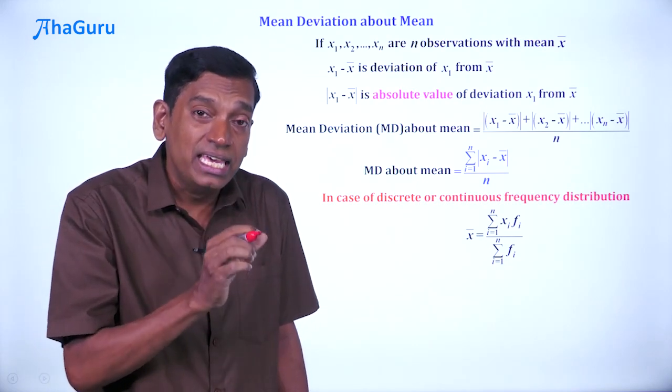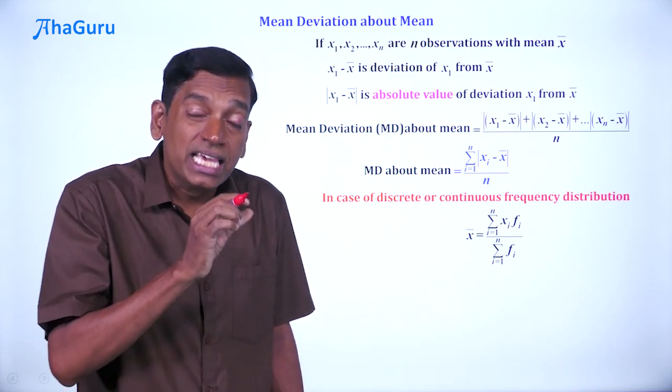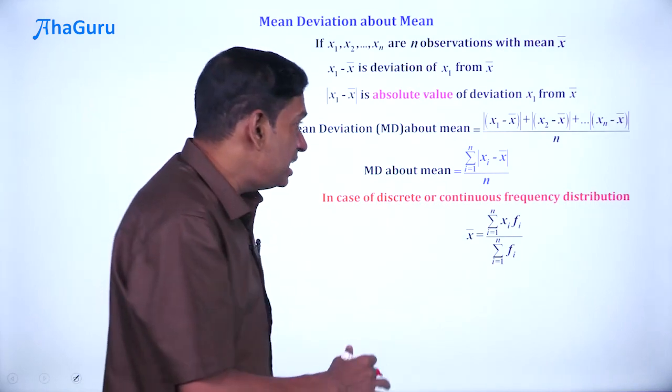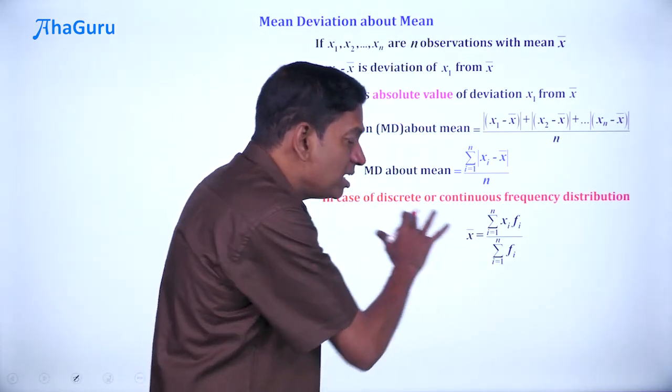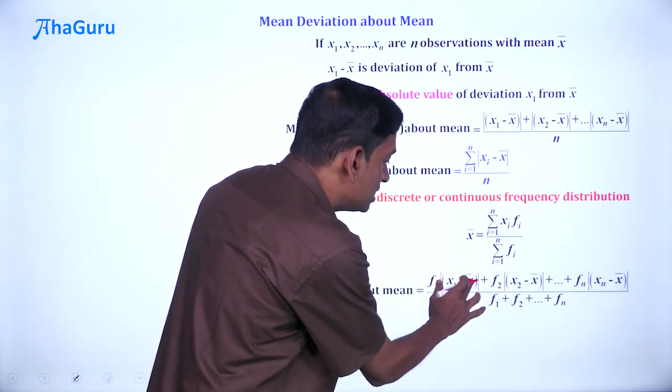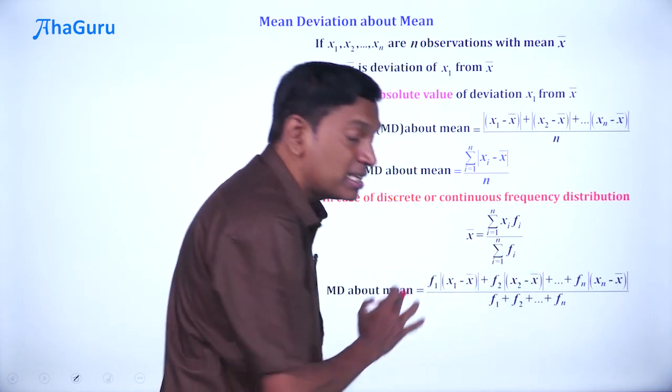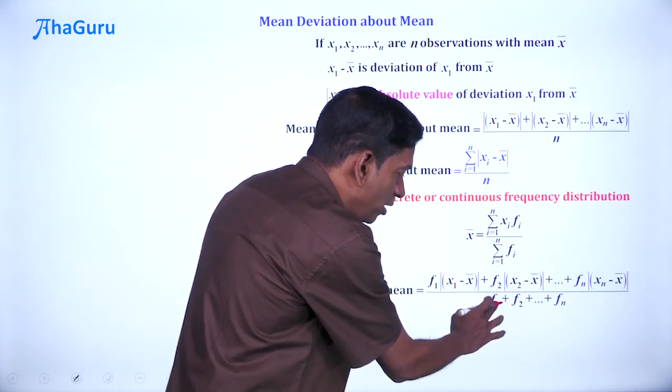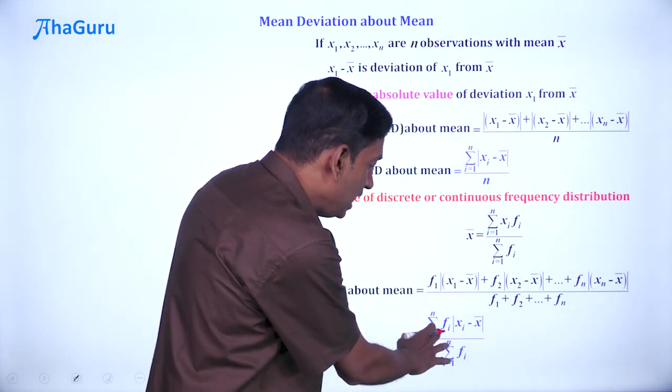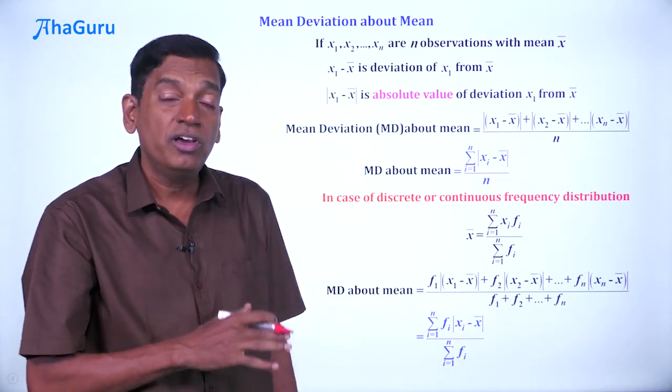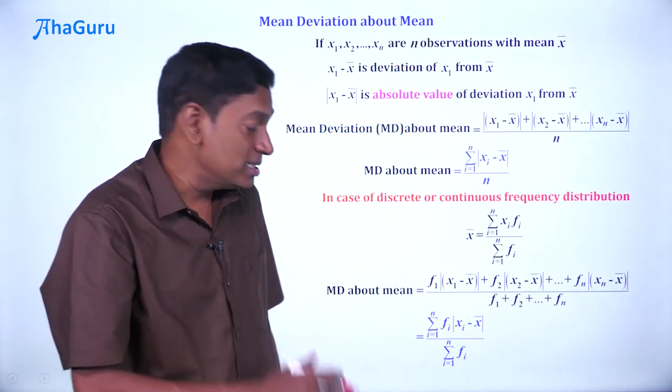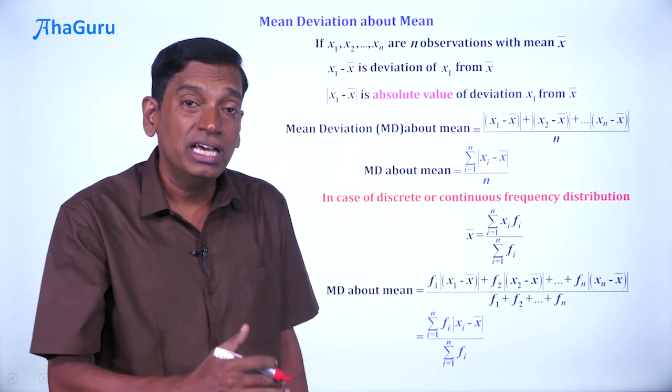But the question is, what is the mean deviation? Well, think about it. Each xi is repeated fi times. Therefore, each |xi - x̄| should also be repeated fi times. So the mean deviation about mean is also going to have a similar looking formula. That is going to be f1 times |x1 - x̄|, f2 times |x2 - x̄|, absolute value and so on. And the denominator is of course f1 plus f2 till fn. And this can be written as Σfi|xi - x̄| / Σfi. So this is the mean deviation about mean when you are given a distribution.